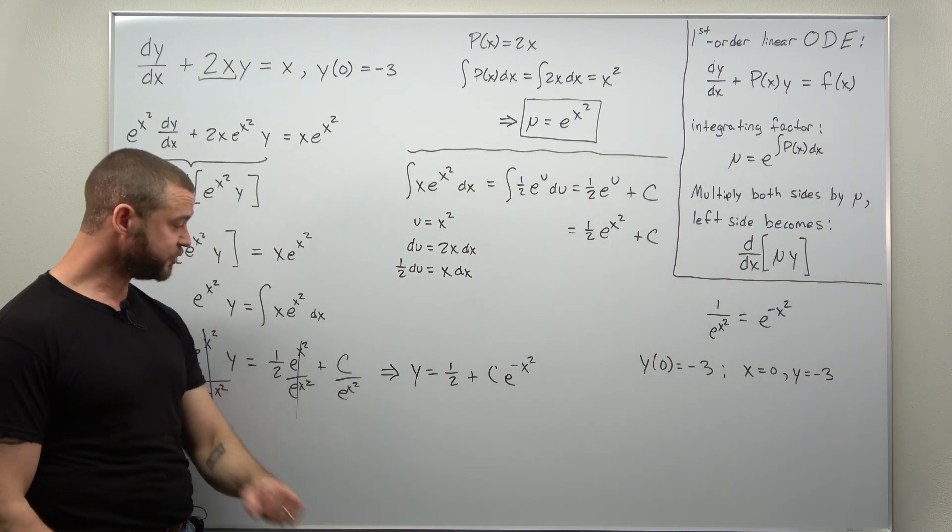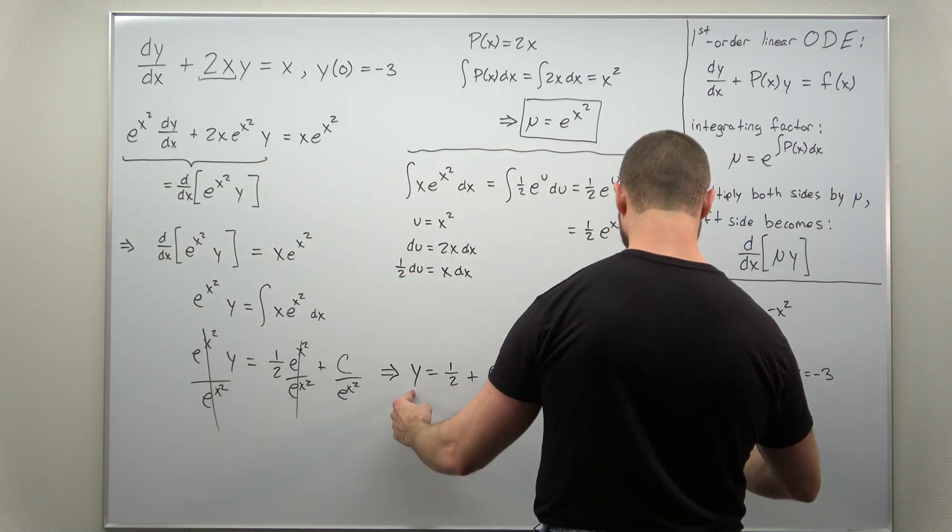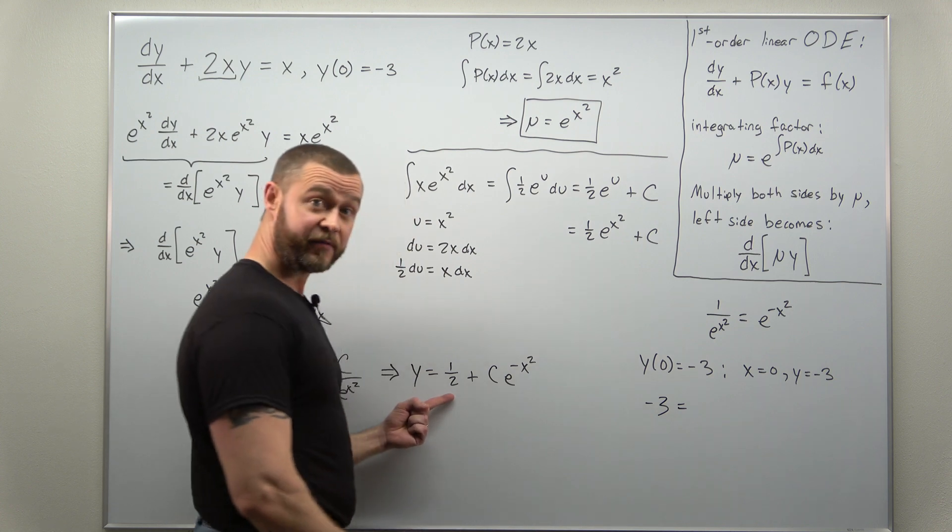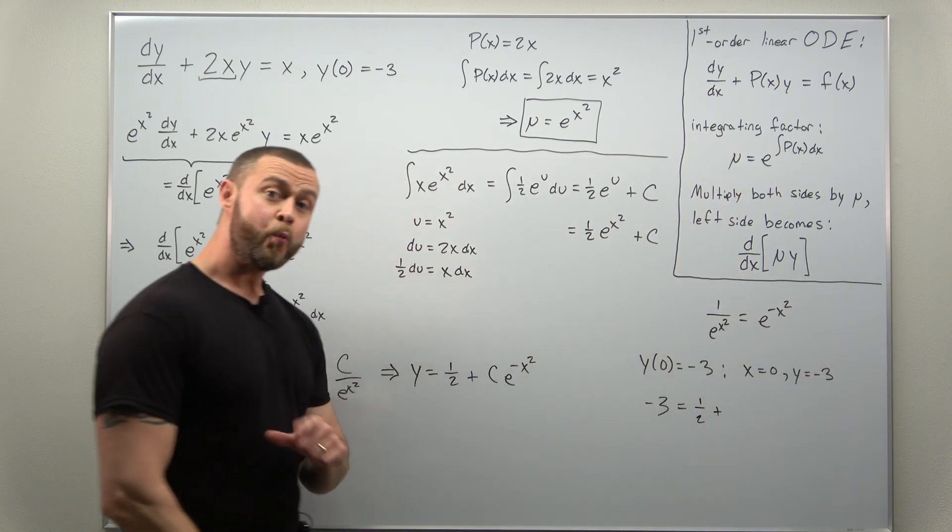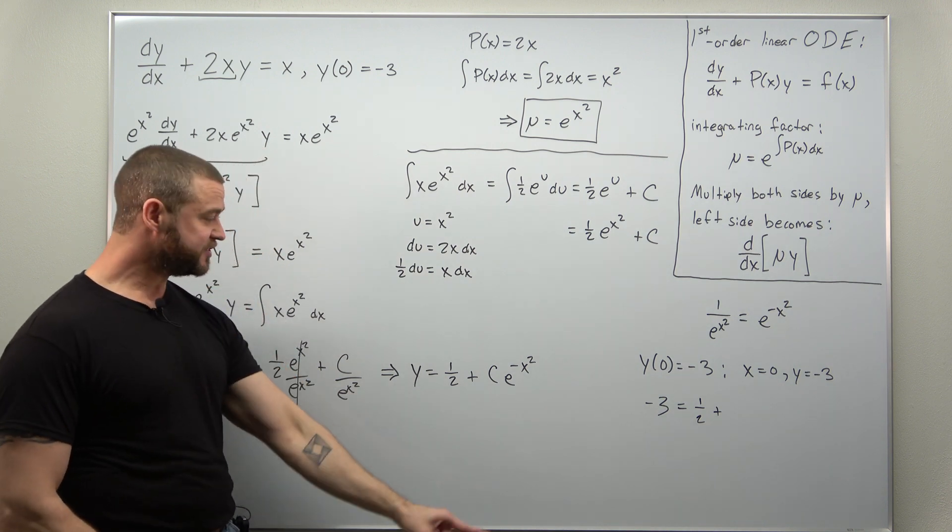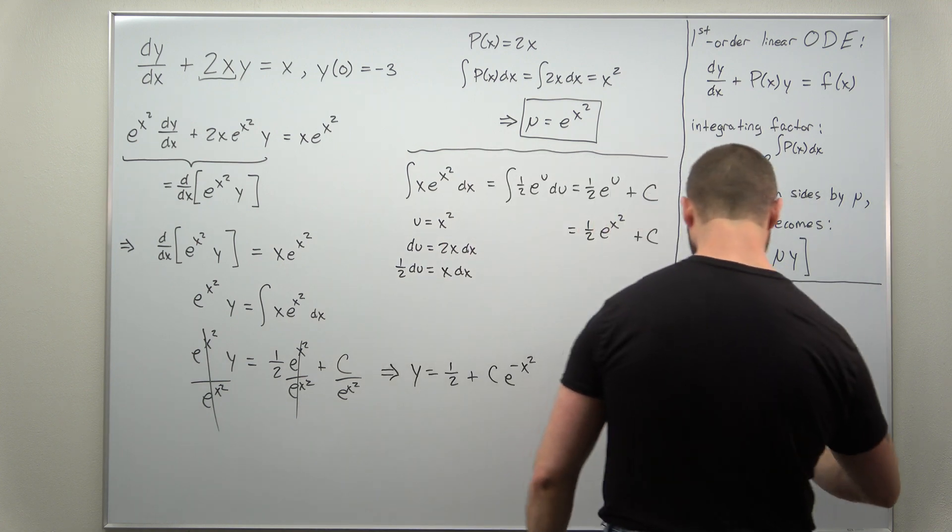So if you go ahead and plug in those two values, y is becoming negative 3, we have a half, and we are plugging in x as 0. You'll get e to the 0, which is 1, so you're just left with plus c there.